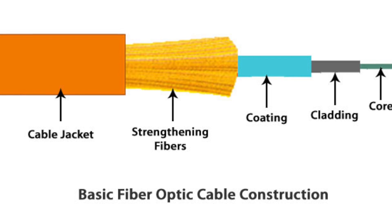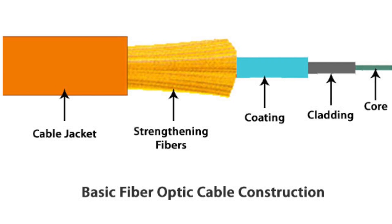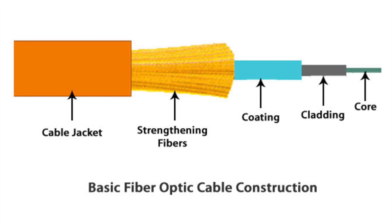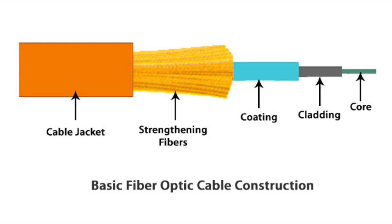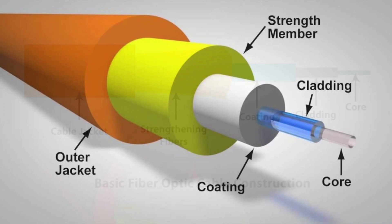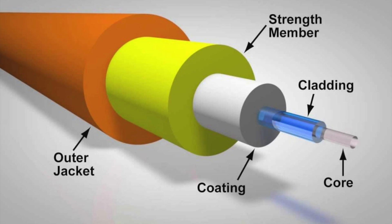Once the fiber has passed all quality checks, it's time to bundle it into cables. This involves combining multiple fibers, sometimes up to several hundred, into a single cable. The fibers are organized into loose tubes or ribbons, depending on the cable design.